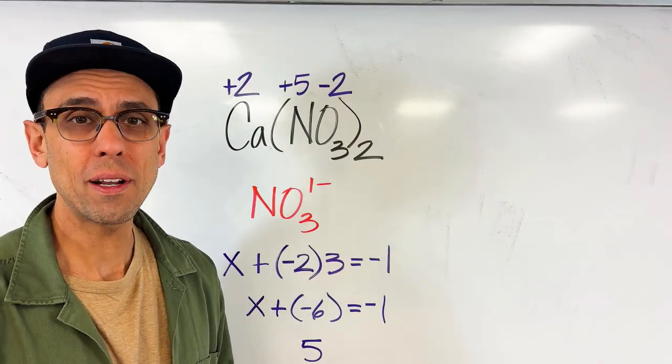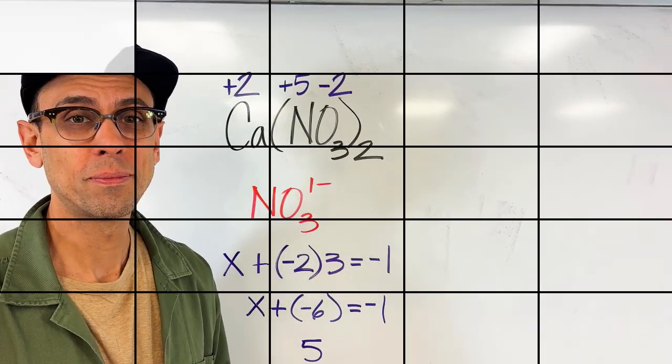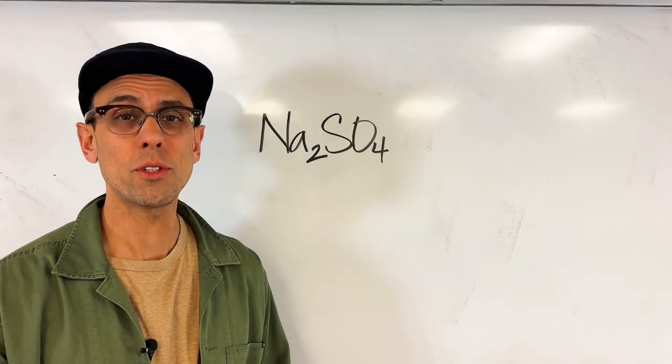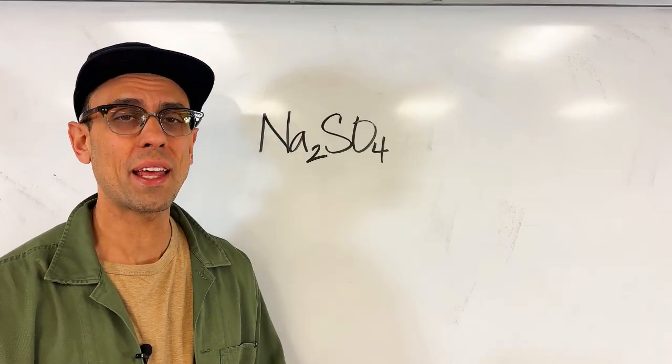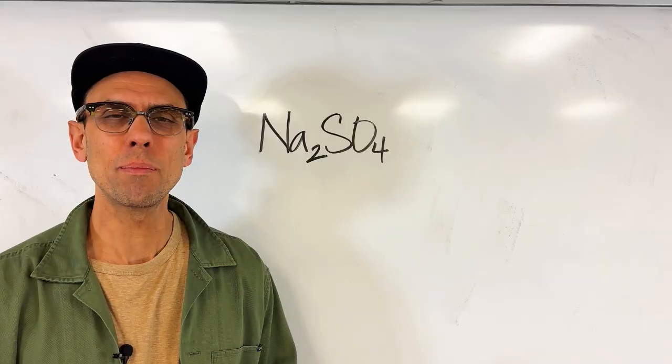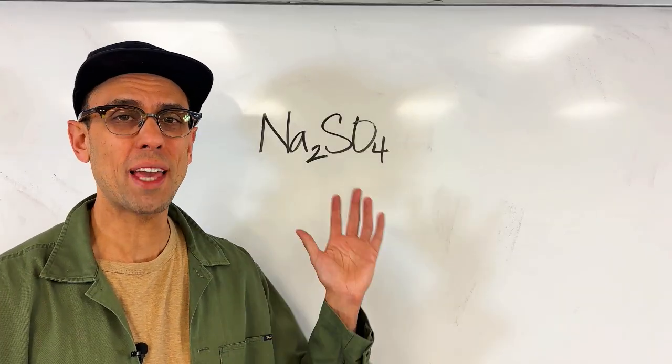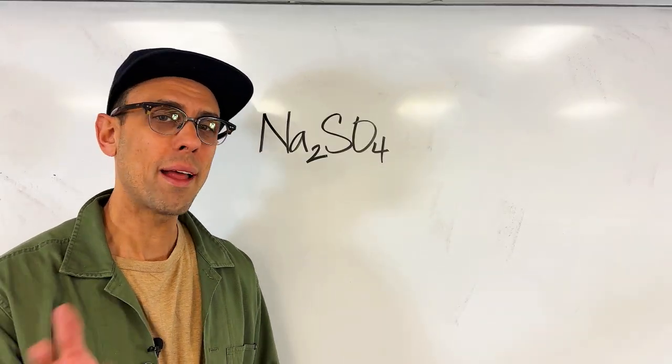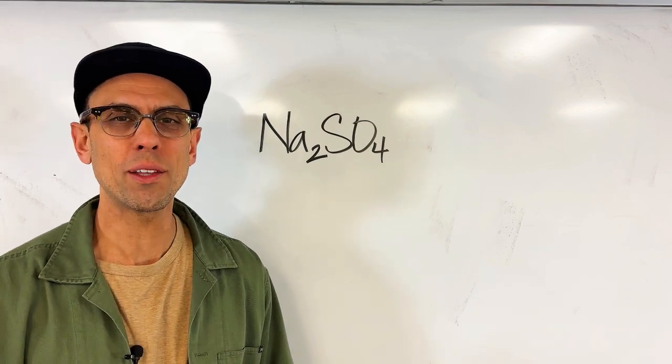Okay let me put another example up here that you can try on your own. So this is sodium sulfate, another ionic compound that has a polyatomic ion in it. I'd like you to pause the video here, try to figure out the three oxidation numbers for the elements you see on the board, and come back when you're ready and I'll go through the answer with you.